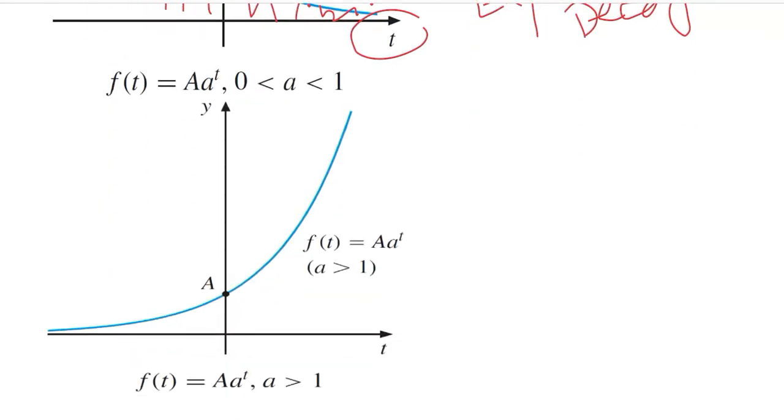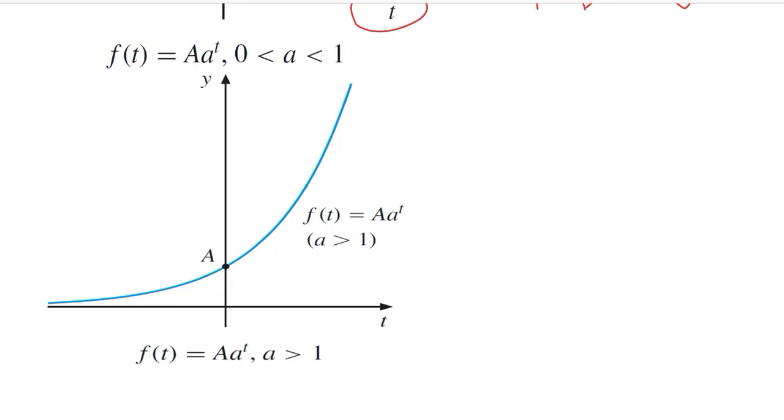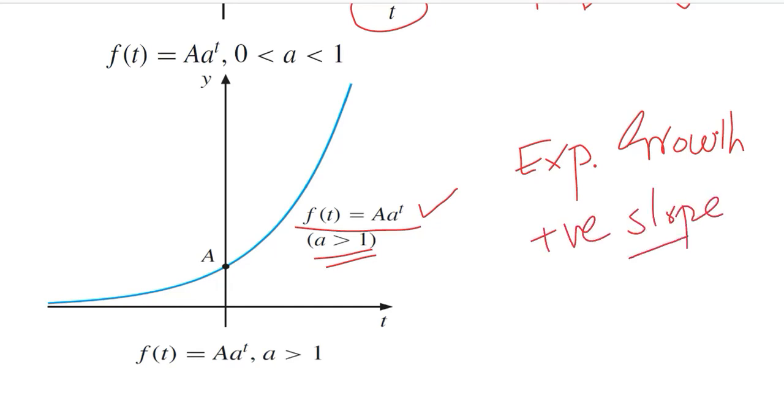Let us see how that will work. This is the possibility of exponential growth in which the same functional form is there. However, in this case, that is the case of exponential growth, we have a greater than 1. So it is not a fraction anymore, it is a positive value again. However, it is greater than 1 rather than being a fraction. You can see it is a positively sloped curve and most importantly it is increasing exponentially. With every unit of time the increase is substantially more than before.